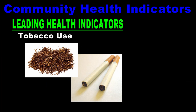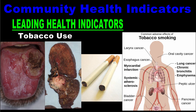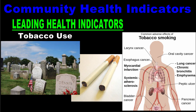The next leading health indicator is tobacco use. Just about everyone knows that smoking or chewing tobacco is not good for you. It can cause heart and lung disease and a number of different types of cancer. Tobacco use is actually the single most preventable cause of disease, disability, and death in the United States. Tobacco use causes more deaths each year than all the deaths from HIV, drugs, alcohol, car crashes, suicides, and murders combined. You can see why tobacco use is one of the biggest health concerns facing our country.